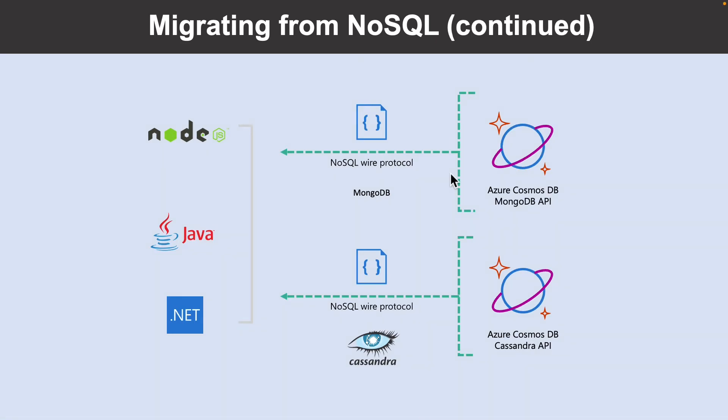Azure Cosmos DB has a MongoDB API and Cassandra API to provide a NoSQL service offering for two of the most popular NoSQL database platforms. Both APIs are protocol compatible, with the Cassandra API supporting CQL version 4 and the MongoDB API supporting MongoDB version 5.